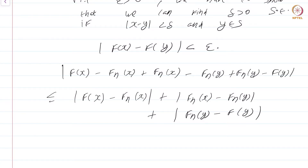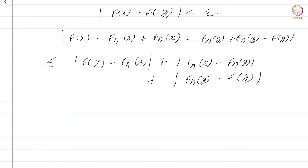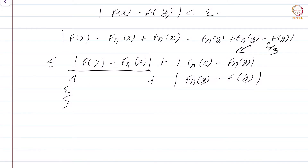This splitting into three terms arises repeatedly in analysis. Now, you might be tempted to think the limit function f is certainly continuous. The first term |f(x) - f_n(x)| can be made less than epsilon/3 because f_n(x) converges to f(x). The middle term |f_n(x) - f_n(y)| can be made less than epsilon/3 by choosing delta appropriately, since f_n is continuous. And the third term can be made less than epsilon/3 because f_n(y) converges to f(y). But not so quick.